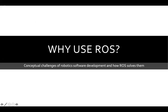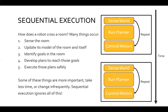So what is ROS? Why do we care? Let's first talk about the conceptual challenges of robotic software development and then how ROS solves some of these. Think of the most naive case possible — how does a robot cross a room? We need a bunch of things to happen: sense the room, update the robot's model of the room, identify goals, develop plans to reach those goals, and execute those plans safely.